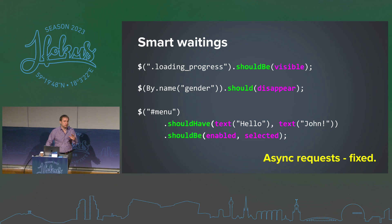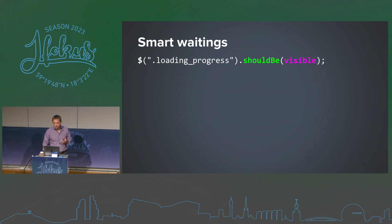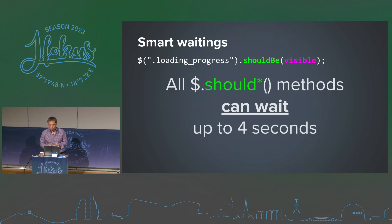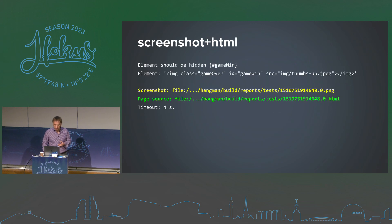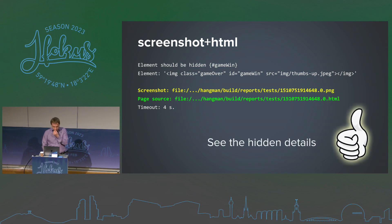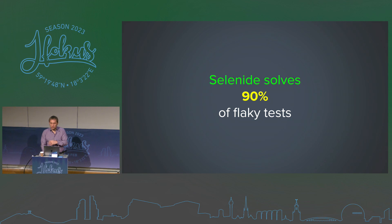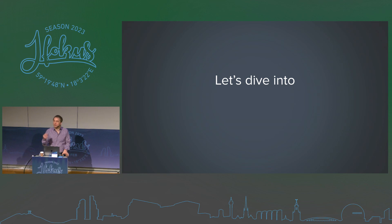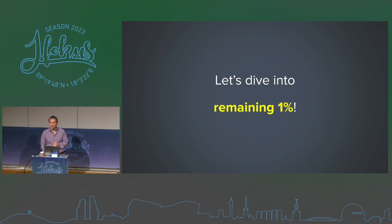Thanks to this smart waiting, all these checks are stable. If we run this test 100 times it will be green. All Selenide checks — like `should be` or `should have` — are smart and can wait, by default up to 4 seconds (configurable). Additionally, when a test fails, Selenide takes a screenshot and page source so you can investigate what happened. Selenide solves about 90% of flaky test cases, but there's a remaining 1% of very tricky flaky tests — and that's my area of interest.